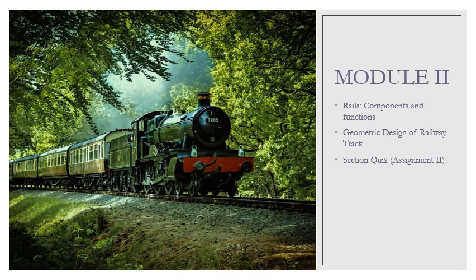In Module 2 we will be discussing about the rails, its components and functions, and different types of rail networks existing in our country. The main part of this module is the geometric design of a railway track, and we will have some problems in this section. At the end there will be section queues considered as Assignment 2.